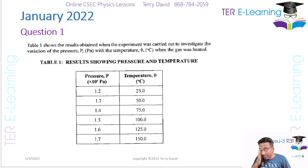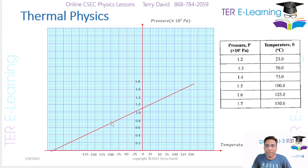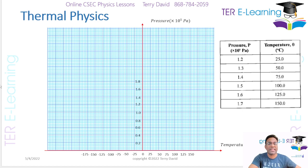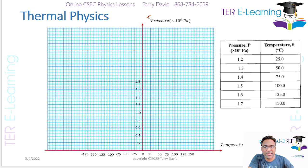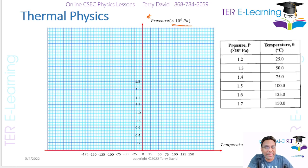We are expected to plot a graph to represent this information. There are several things we are required to put on this diagram. First, we must label our axes. We have pressure, and the pressure is given by 10 to the power of 5 Pascals - we're getting that information straight from the table. We're going to plot temperature on the horizontal axis, measured in degrees Celsius - again, that information comes directly from the table.